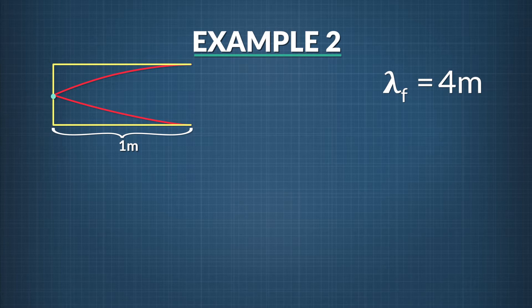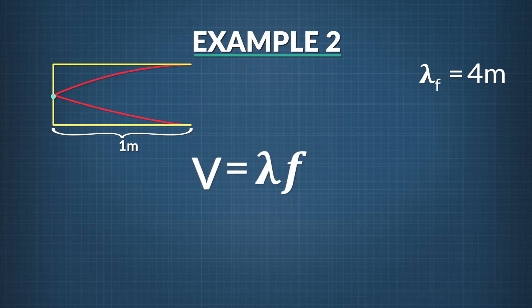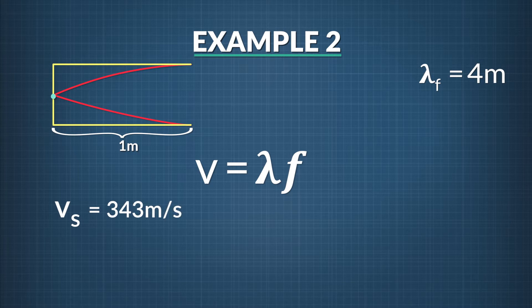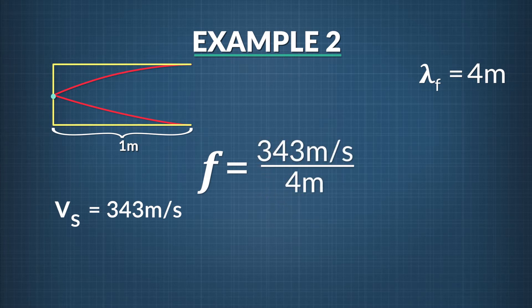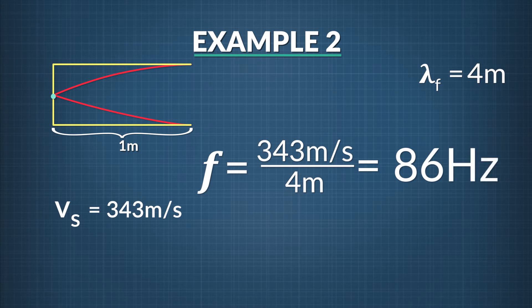Could we hear a note like this? Using wave speed equals wavelength times frequency, and rearranging so frequency equals speed divided by wavelength: 343 meters per second divided by 4.0 meters equals 86 hertz. This note is towards the lower end of our hearing range, but we can hear it.